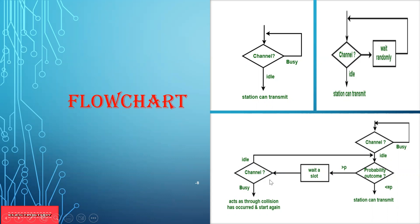In P-persistent, a frame is ready and the channel is checked — if busy, it loops back. If idle, it checks the probability. If the random number is less than or equal to the probability, the station transmits. If greater, it waits for a slot time and then re-checks the channel. If the channel is then busy, it treats this as a collision and restarts. If idle, it goes back to the probability check and generates a new random number to decide again.